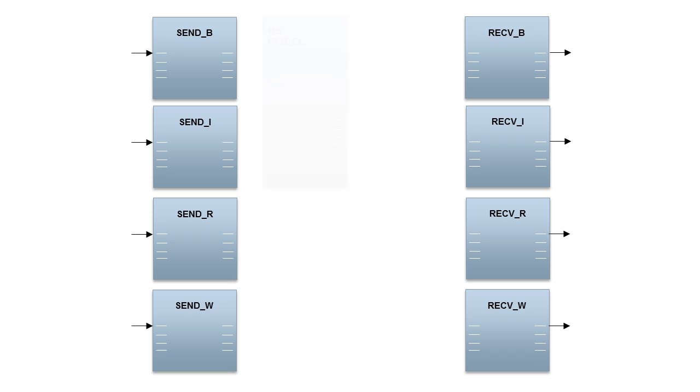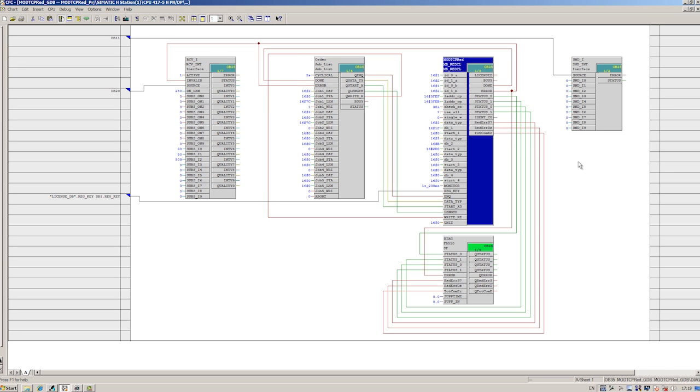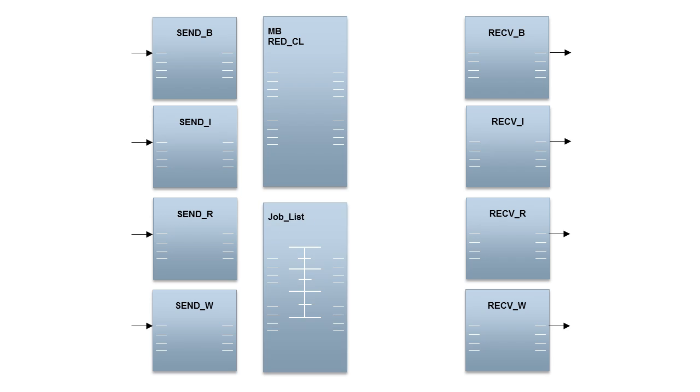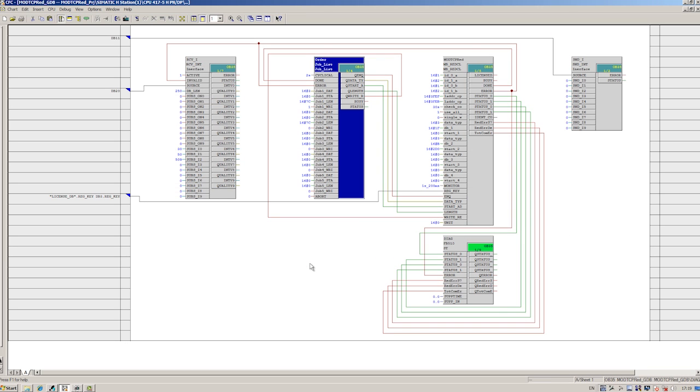The Modbus channel block coordinates the connections over which communication exchanges take place and is responsible for data storage. This block acts as an active partner and can coordinate a total of four jobs. The job list block provides a great deal of flexibility in parameterizing the different jobs. We can parameterize jobs individually and schedule the processing of the entire job list. All jobs can be interrupted and individual jobs can be temporarily skipped.